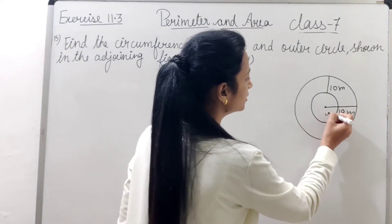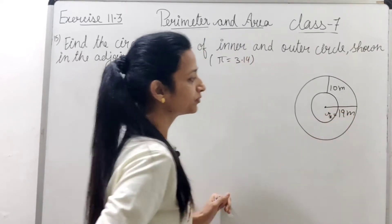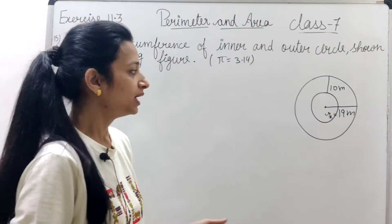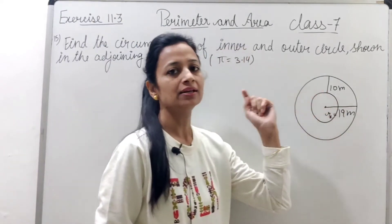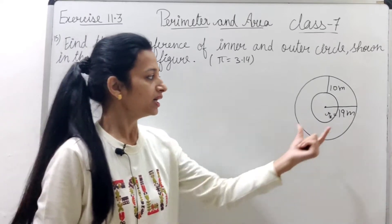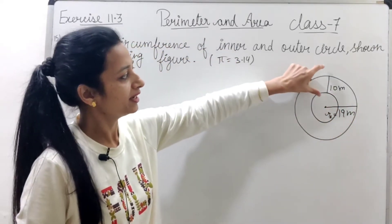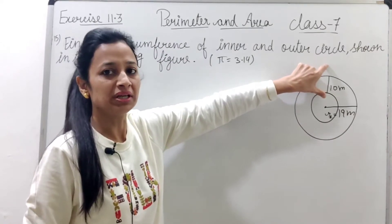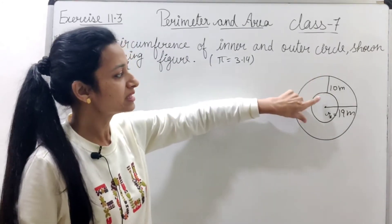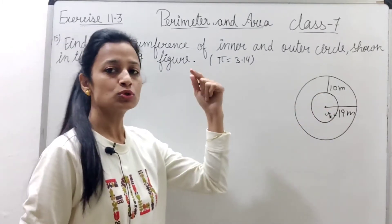we will assume R1. And the inner circle radius is given. The outer circle radius is 19. This value is 10 meters. Means, the distance is given 10 meters.